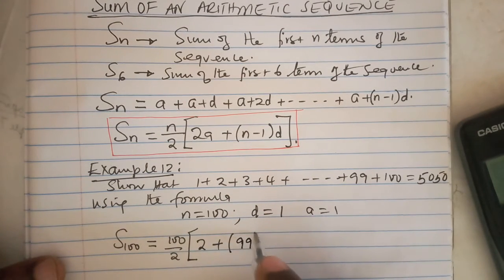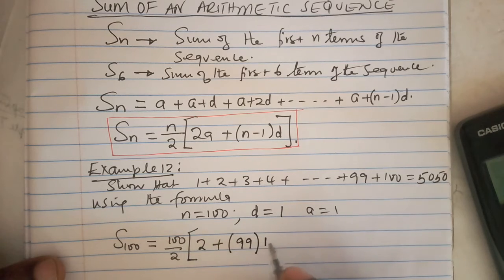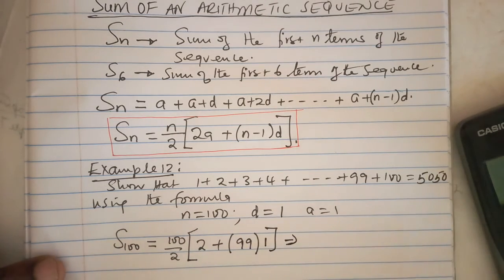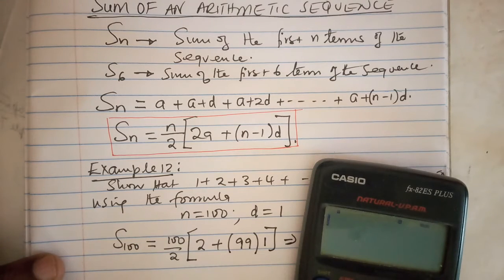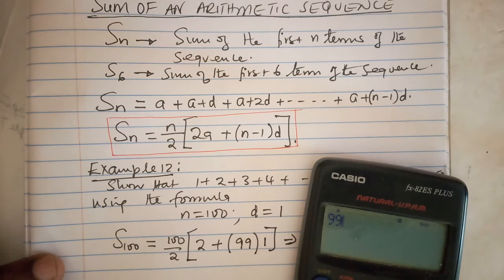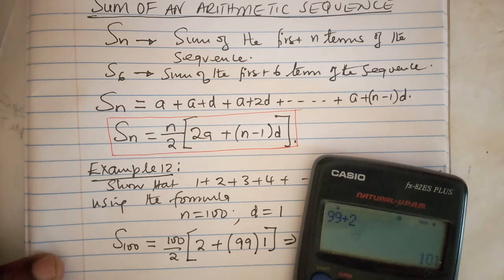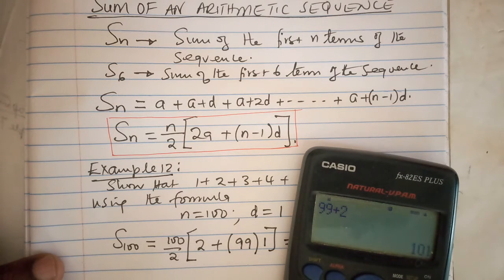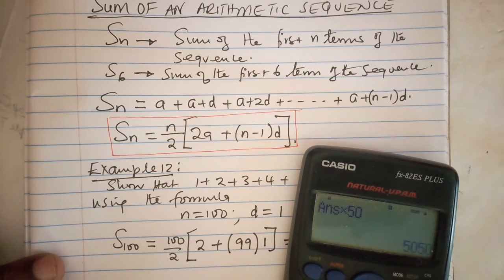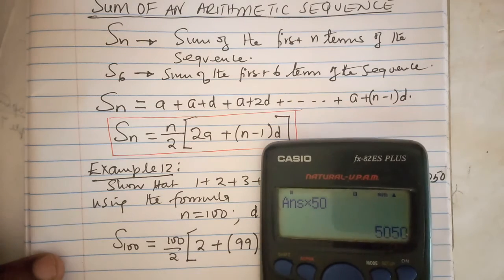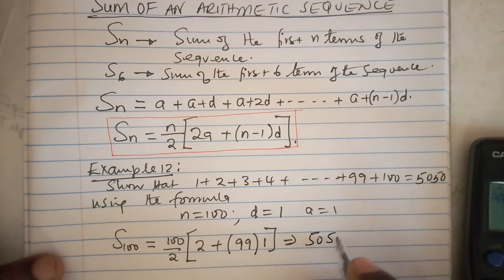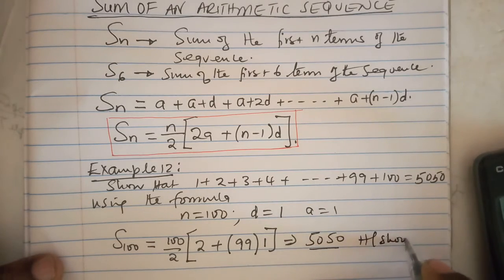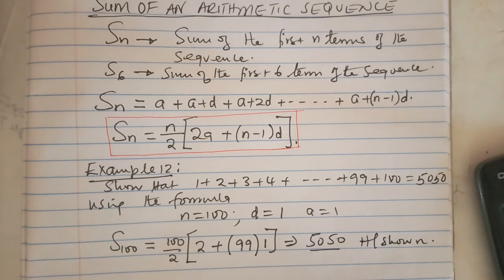So 2a is 2, plus 100 minus 1, which is 99, multiplied by the difference which is 1. 99 plus 2 times 50, 100 divided by 2 is 50, so times 50 is easily 5050. Hence shown, we have been able to show that using the formula.